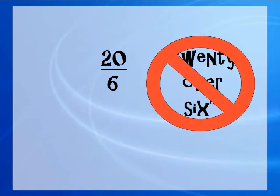A fraction is not two numbers, one on top of the other. It is a single amount that's represented in this way, so please never call it 20 over 6, or a number over a number.